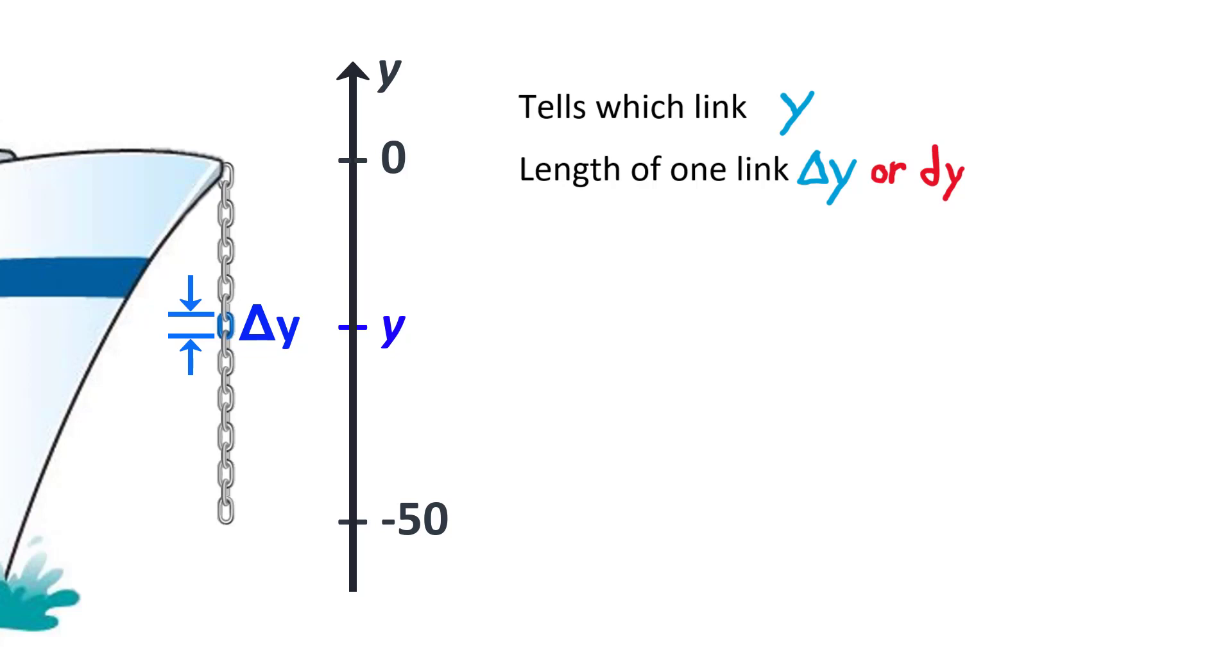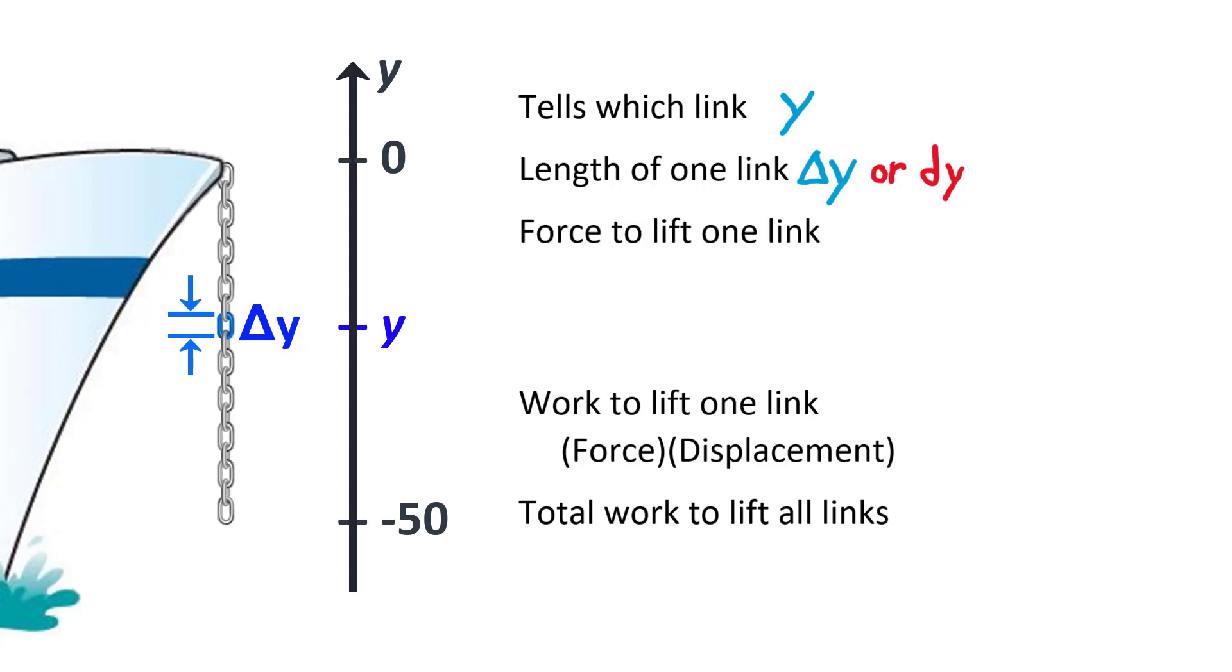Now that we have notation for the way the chain is broken up into links, we need to remind ourselves of what we are trying to find. We want the work required to lift the entire chain up to the deck, which we are going to find by adding up the work required to lift each of the links. That means we need the work required to lift one link. Work is force times displacement. So to find work, we need the force used to lift one link and the displacement of the link.